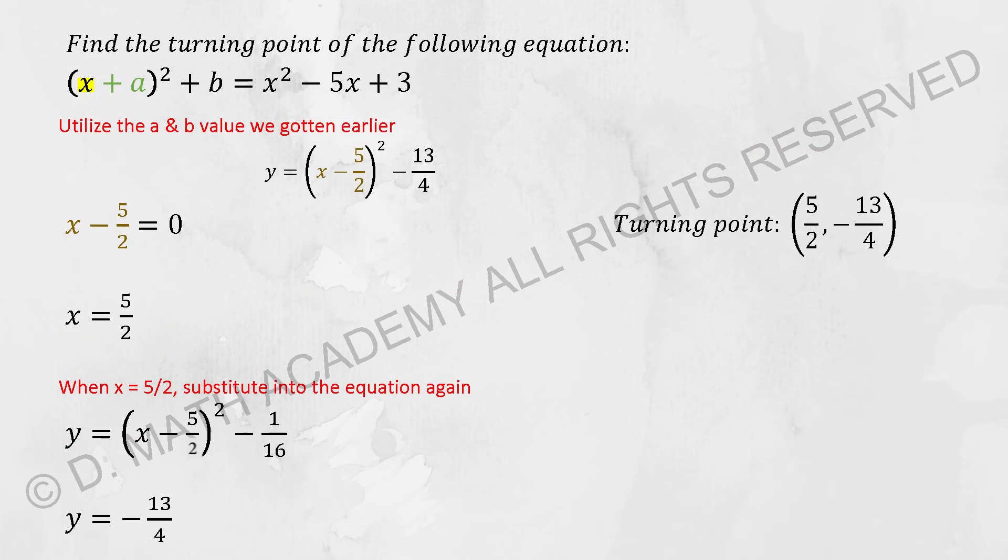Using this completing the square concept, you can actually identify the turning point. So focus on the bracket that we have there, where x - 5/2 = 0, x equals to 5/2. This one will be your x coordinate for the turning point.